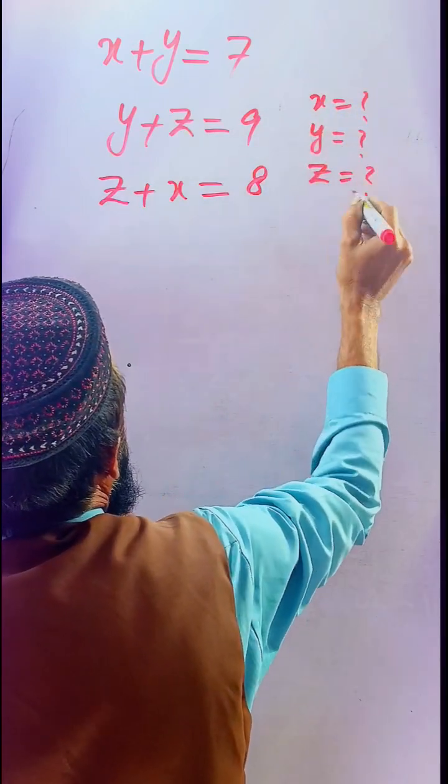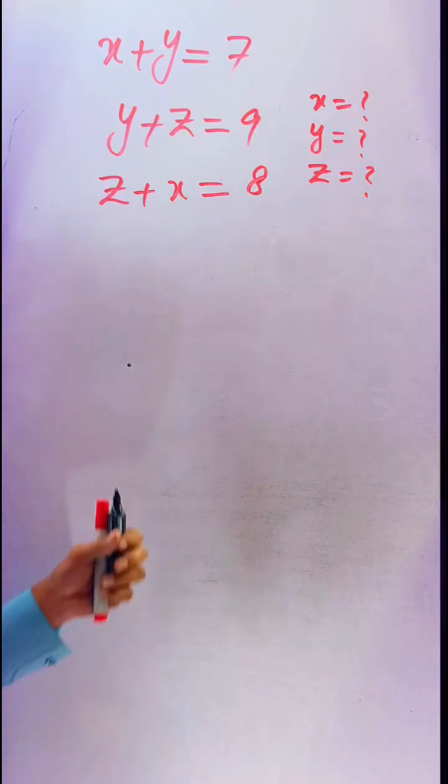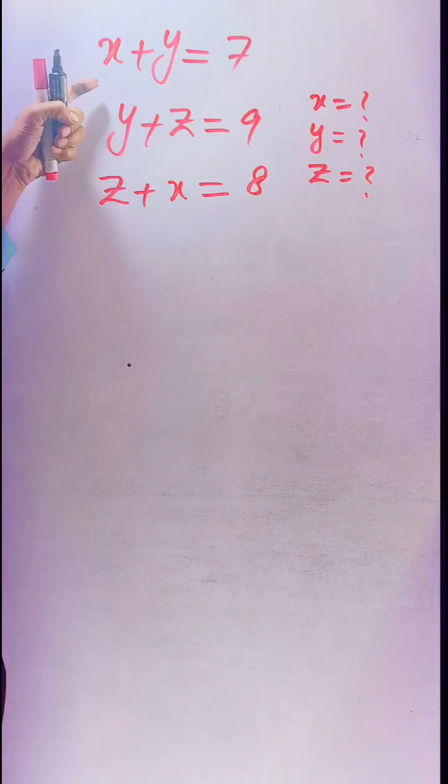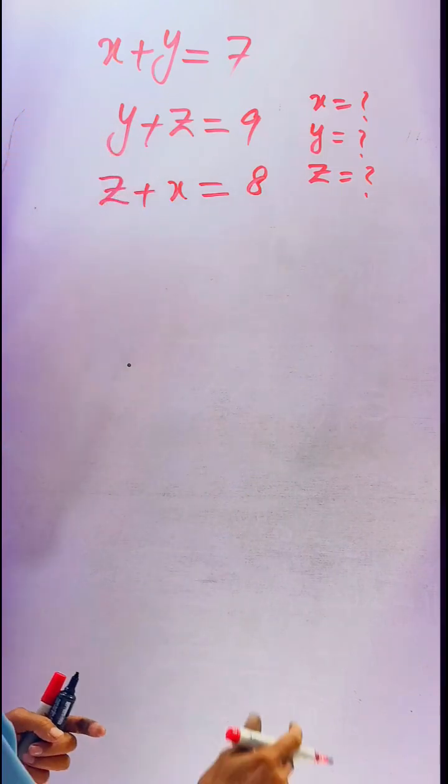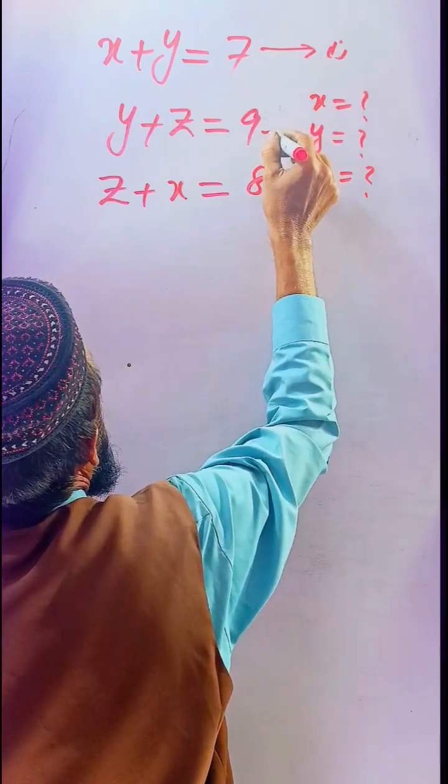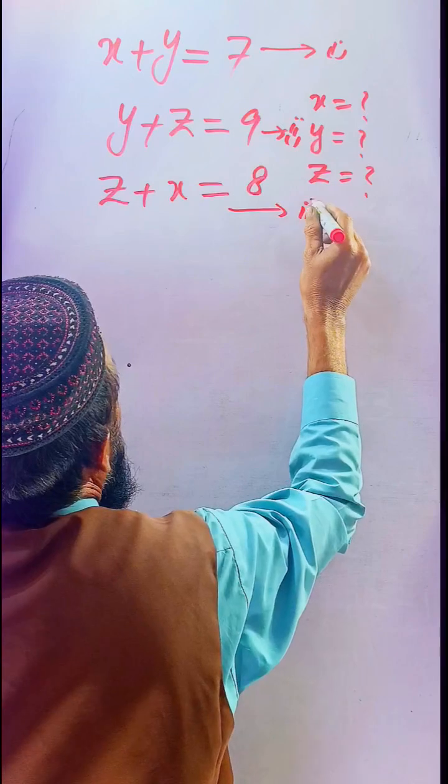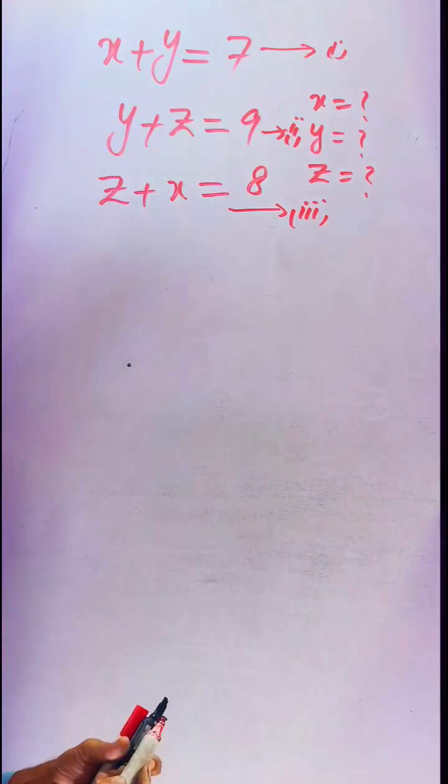This is a tricky type of question. How can we find the values of x, y, and z? First, we label x plus y equals 7 as equation 1, this will be equation 2, and this will be equation 3. If we add all of these equations, we can get the result.